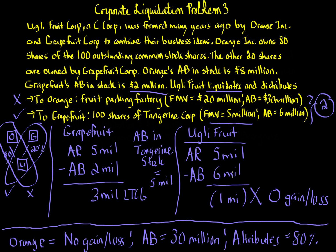We've now addressed the consequences to Orange, Grapefruit, and Ugly Fruit Corporation for both variation one and variation two. I hope you've enjoyed this video. Please take a look at the other corporate tax videos, because understanding the big picture really does help.